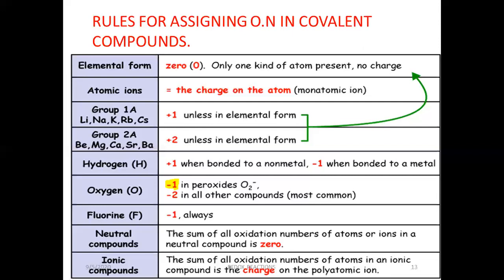The next special case is hydrogen. When hydrogen is bonded to a non-metal, its oxidation state is plus 1 because it is bonded to an electronegative atom. While when it is bonded to a metal or an electropositive element, its oxidation state is minus 1. Now the case of oxygen: in almost all its compounds, oxygen has an oxidation state of minus 2. While in peroxides, the oxidation state of oxygen is minus 1. For example, in H2O2 or Na2O2, if Na or H is plus 1, then the oxidation state of oxygen comes to minus 1.